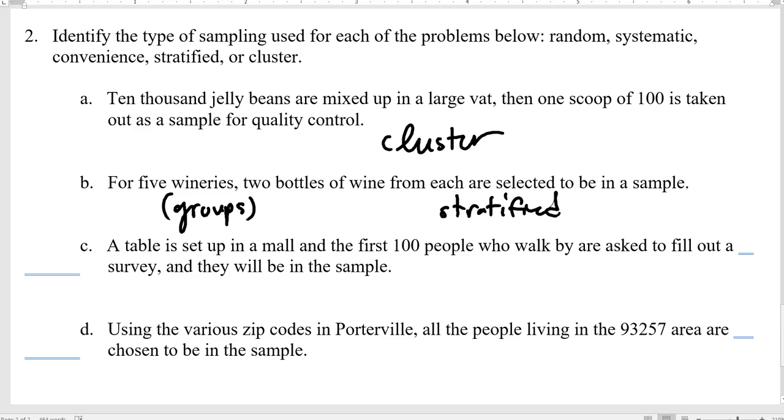A table is set up in a mall, and the first hundred people who walk by are asked to fill out a survey. They will be in the sample. There's our cafeteria again. It's very easy to do that, but that's not going to represent everybody. I don't know the last time I was in the mall in Bakersfield. Maybe once a year. I'm going to be left out of that survey, and they may care about my opinion. So that's convenience.